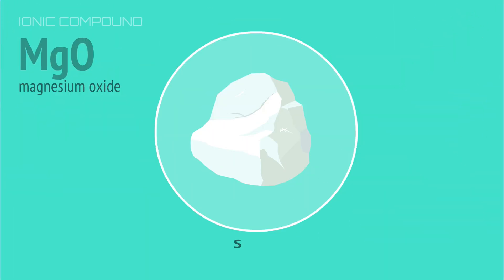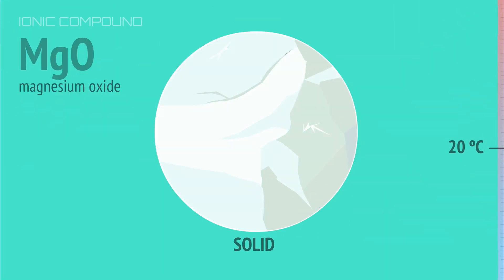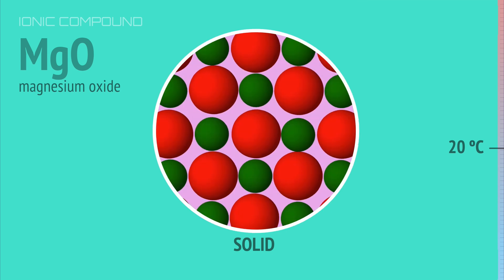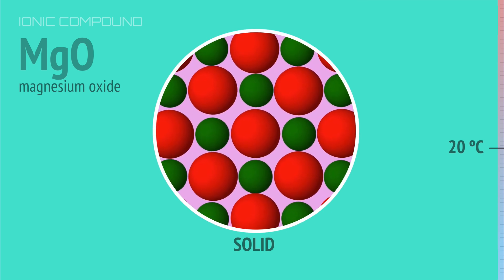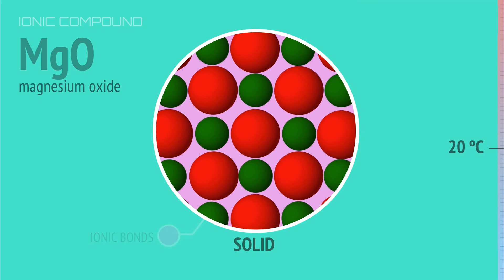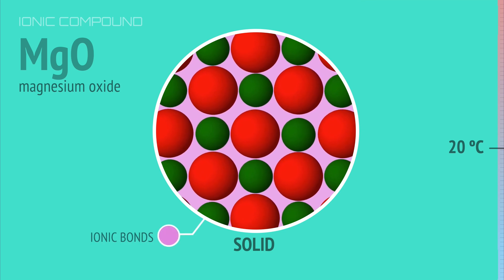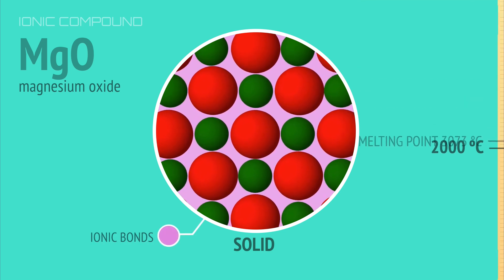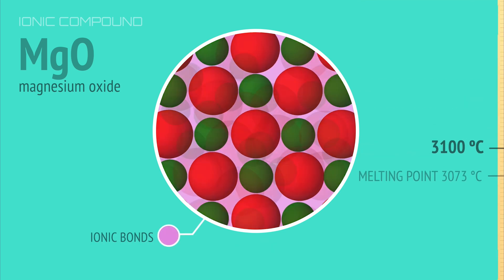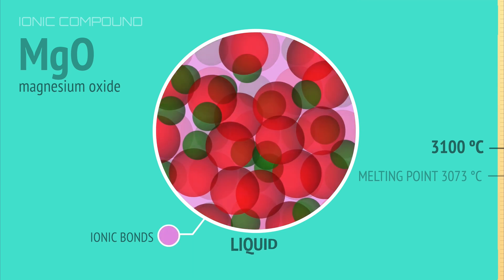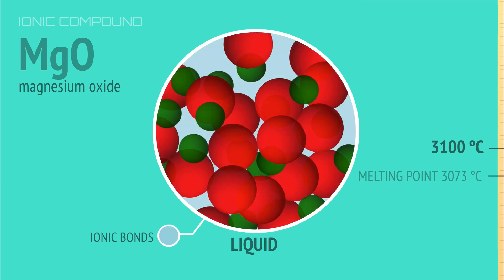Magnesium oxide is a solid at room temperature. The magnesium and oxide ions are held in fixed positions by extremely strong ionic bonds, and they can't break free of these bonds until the temperature reaches over 3000 degrees Celsius.